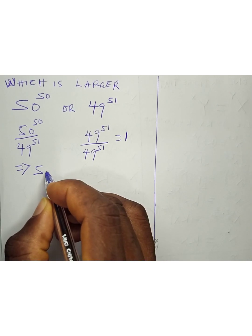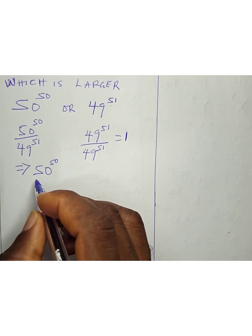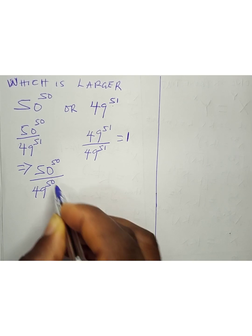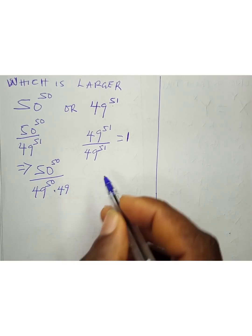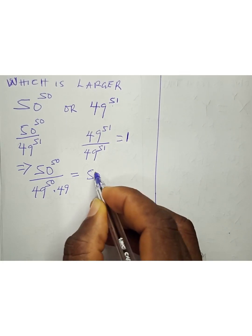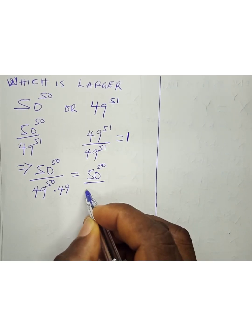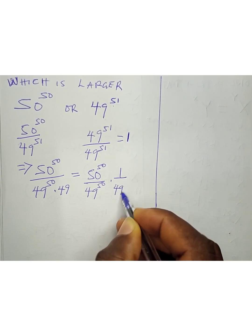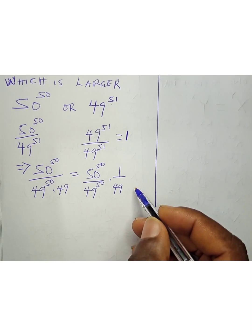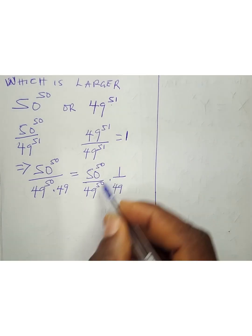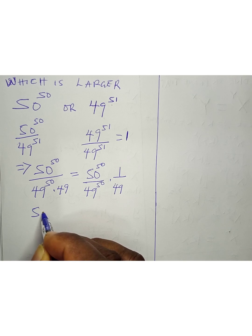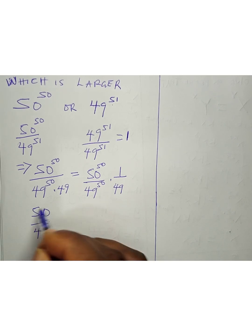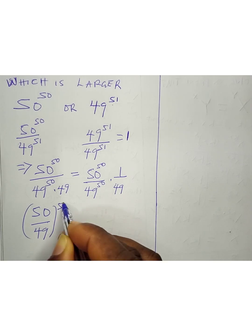So this implies that we're going to have 50 to the power of 50 divided by 49 to the power of 50, times 49, which is 49 to the power of 51. This equals 50 to the power of 50 divided by 49 to the power of 50, times 1 divided by 49.